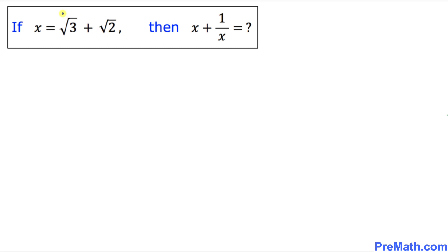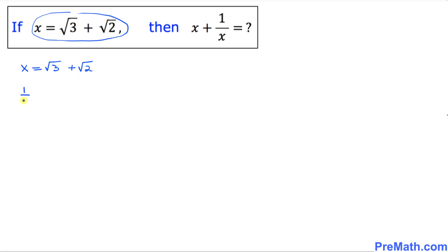So let's start off with our left hand side. We have x equal to square root of 3 plus square root of 2. Then, 1 over x becomes 1 divided by square root of 3 plus square root of 2.